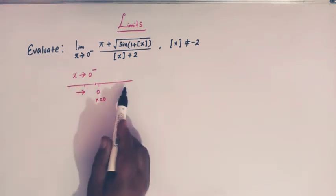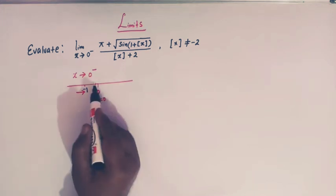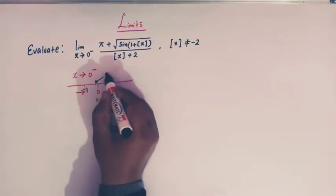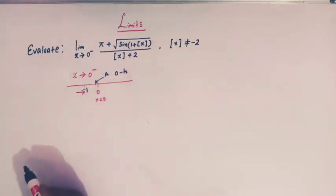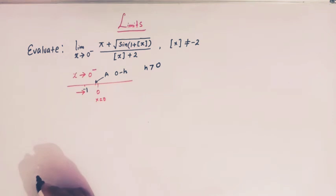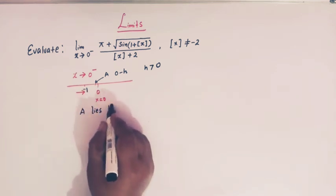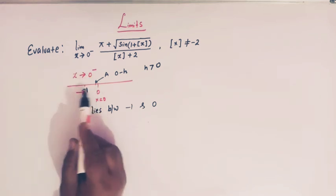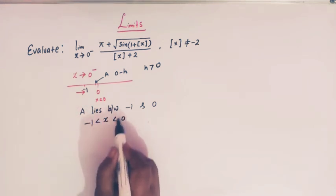From the number line, minus 1 lies somewhere here. When x tends to 0 from the left, we are very close to 0 — let us take this point as 'a'. This point a can be taken as 0 minus h, where h is a very very small quantity but greater than 0. From the number line, a lies between minus 1 and 0. So when x tends to 0 from the left, the value of x lies between minus 1 and 0.